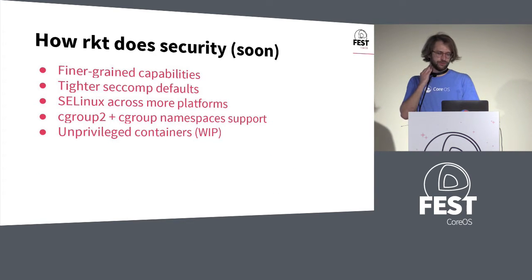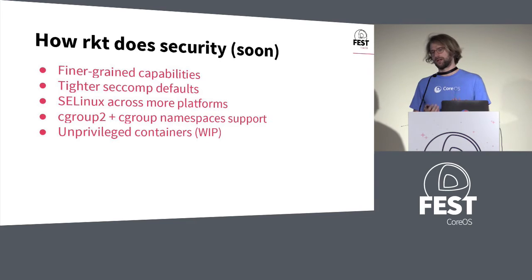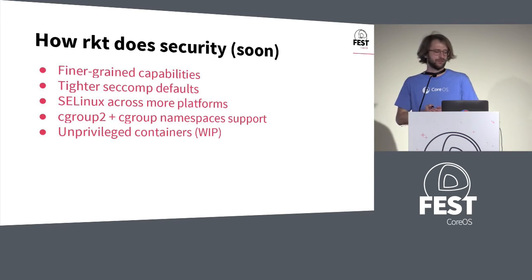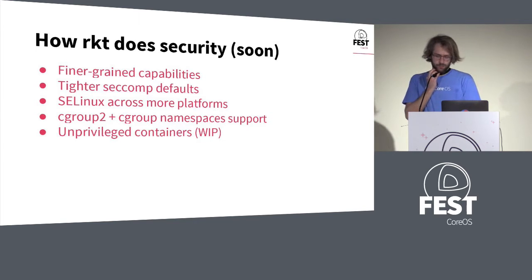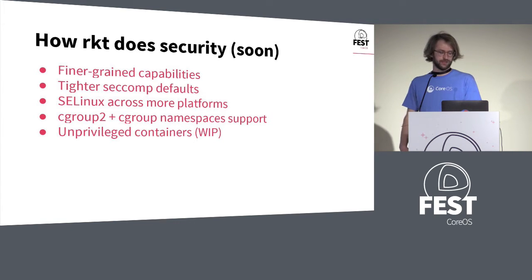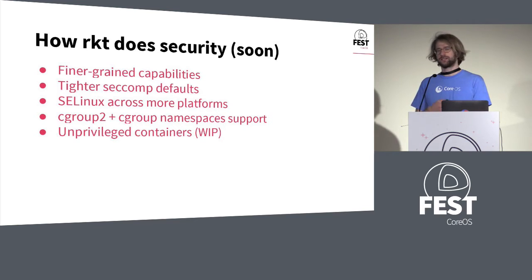Things we're working on: we're always trying to improve security in Rocket. We're working on splitting apart more fine-grained capabilities among the different processes in a Rocket pod — Linux capabilities. We're setting tighter defaults around other Linux kernel features like seccomp or no-new-privileges, which prevents processes from ever being able to gain new privileges. We're working on better SELinux integration, since at the moment it only works on a couple of platforms and is quite distribution-specific. We're also working on support for the new unified cgroup hierarchy in the Linux kernel and cgroup namespaces, which allow more isolation and cgroup control within pods. Finally, there's work to allow creating containers entirely unprivileged — that's the holy grail where we can do all Rocket operations as a non-root user.